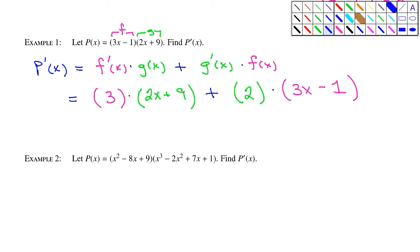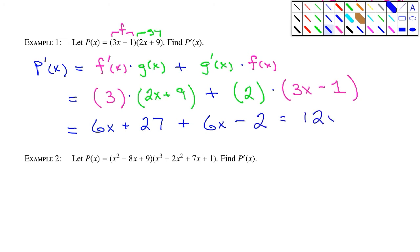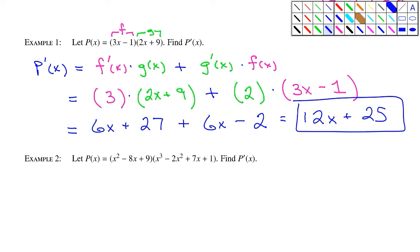That is the derivative, but now we multiply and simplify everything out. We get 6x plus 27 plus 6x minus 2, and that equals 12x plus 25. That's the simplified derivative of the original product.